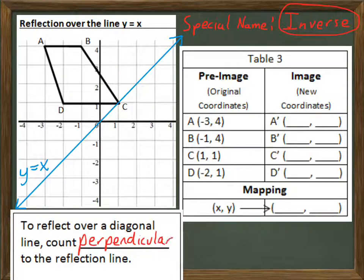When you reflect over a diagonal line, you're going to count perpendicular to the reflection line. In this case, our reflection line has a slope of 1 because we're going a rise of 1 and a run of 1. If you recall from what we did earlier this year, a slope perpendicular to 1 over 1 would be negative 1 over 1. So, we're going to count with a slope of negative 1, which is just diagonally with a negative slope, in this case.